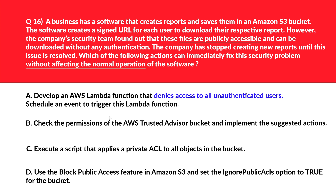Next question. Option A: develop an AWS Lambda function that denies access to all unauthenticated users and schedule an event to trigger it. This requires additional resources and could disrupt the application's normal workflow — incorrect. Option B: check permissions using AWS Trusted Advisor and implement suggested actions. Trusted Advisor provides generic best practices and its checks are broad — it may not specifically or immediately address the issue of public access to files — incorrect.